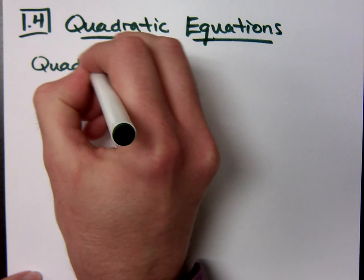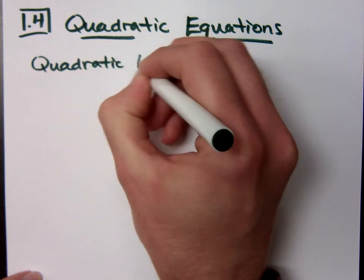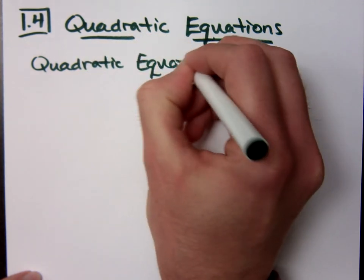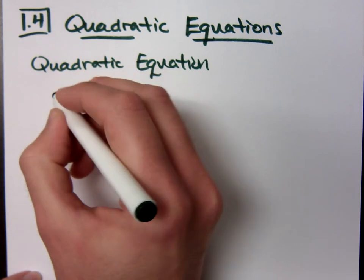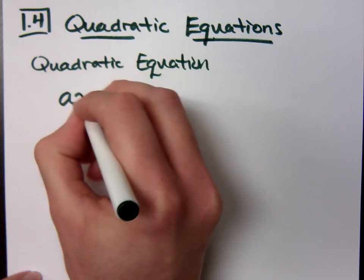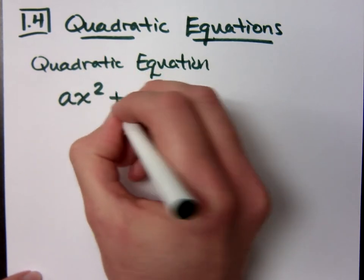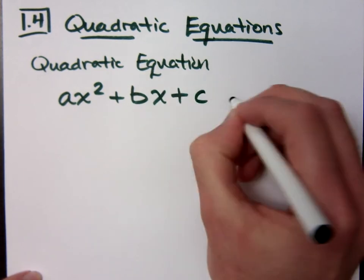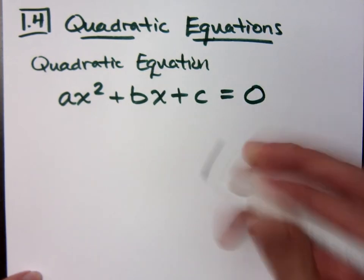Remember what a quadratic equation looks like. Your most basic form for a quadratic equation is this guy. ax squared plus bx plus c is equal to zero.